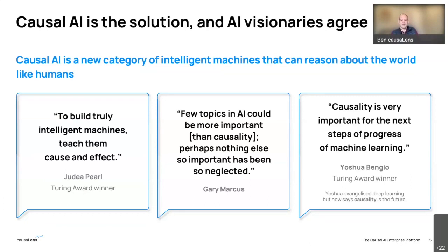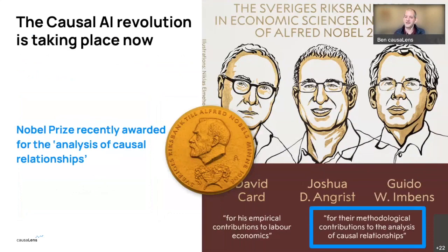A number of people who are far smarter than I think that causality and causal AI is going to be the area to watch for the next breakthrough in artificial intelligence — people like Judea Pearl, Gary Marcus, Yoshua Bengio. They've been talking about causal AI for quite a while. Last November, the Nobel Prize committee awarded the Swedish Central Bank Prize to three professors — two of whom, Professors Angrist and Imbens, were recognized for their breakthrough methodological contribution to the analysis of causal relations.